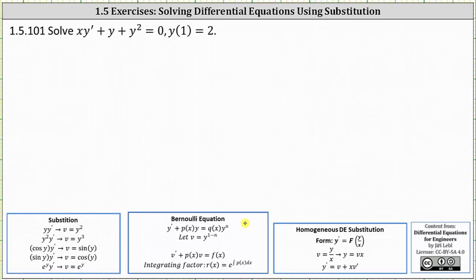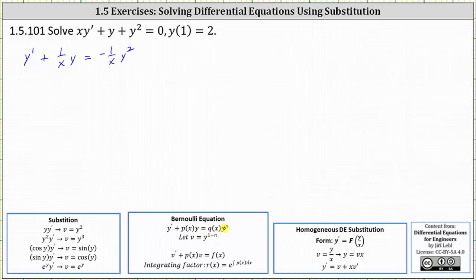To help us identify the substitution, let's first divide through by x, or multiply both sides by 1 over x. This gives us y prime plus 1 over x times y. Let's also subtract y squared on both sides, which gives us on the right negative 1 over x times y squared. The given equation is a Bernoulli equation because it's in the form of y prime plus a function of x times y equals a function of x times y to the power of n.